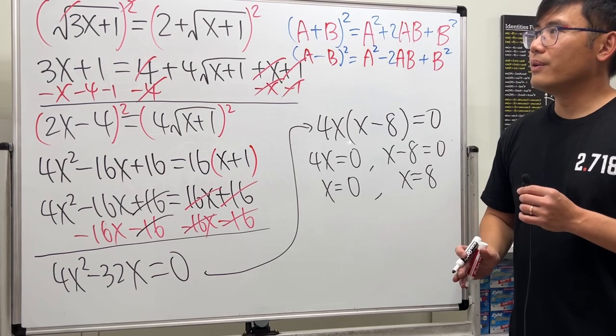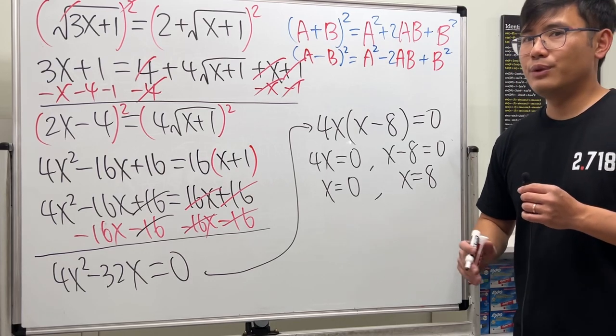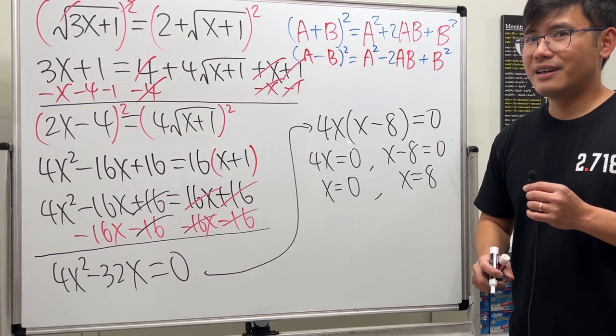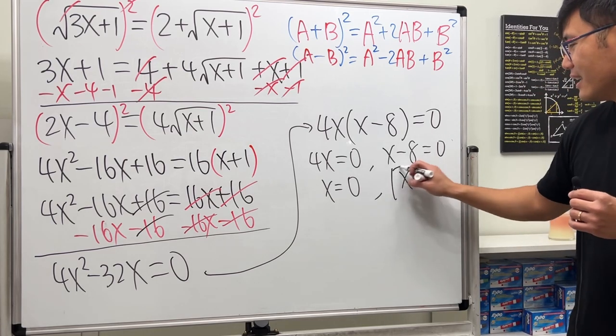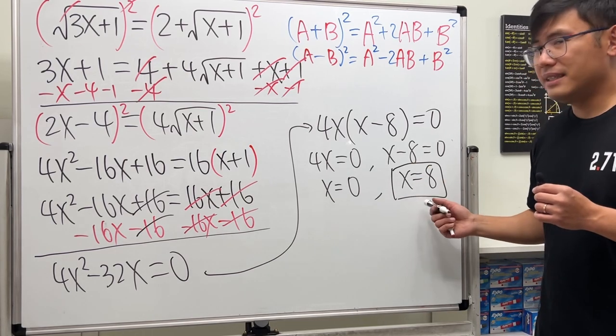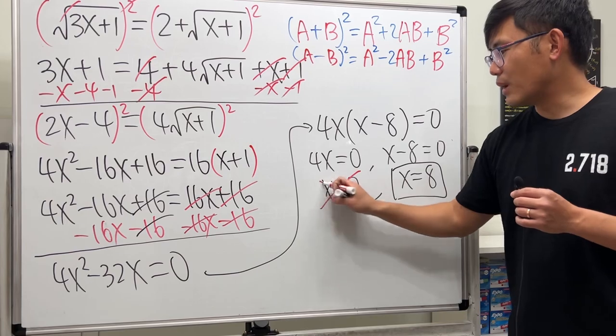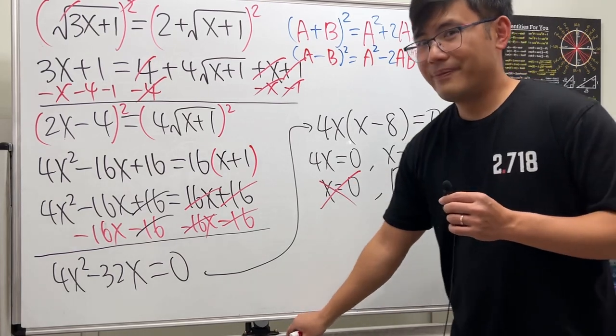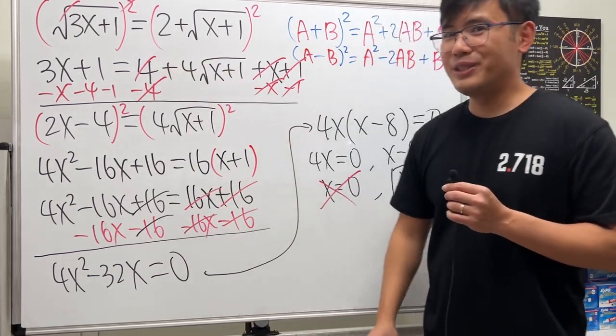Okay, be really, really careful. Do we have two answers or just one answer? In fact, we only have one answer. x equals 8 is the only answer. This right here does not work. Because when we have square root, it's tricky. Be careful.